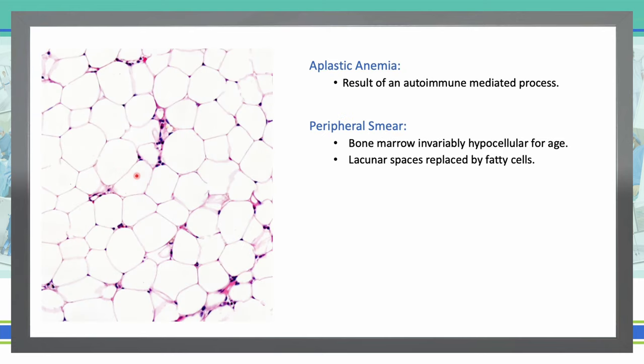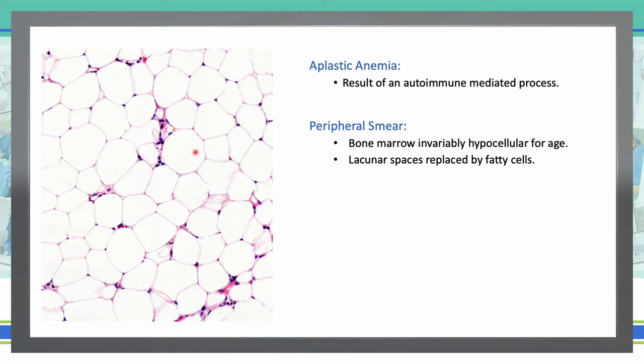Next we have bone marrow that is hypocellular for age, and we can see that lacunar spaces are replaced by fatty cells — that is aplastic anemia. Aplastic anemia commonly results from an autoimmune-mediated process. Infectious agents such as hepatitis A, B, and C viruses can cause it. Drugs such as allopurinol, carbamazepine, and benzene can also lead to it. Or it can result from loss-of-function germline mutations due to DNA repair defects, such as Fanconi anemia.